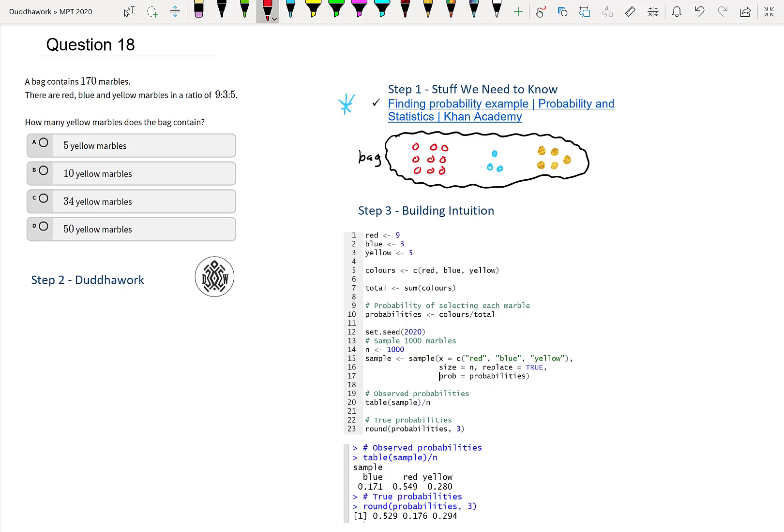So how many total do we have in the bag? The total is equal to 9 plus 3 plus 5, and that is 12 plus 5, so that's 17 marbles. Now that we have 17 marbles, we're asking for how many yellow marbles does the bag contain? Let this be step one, find total.